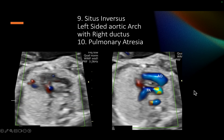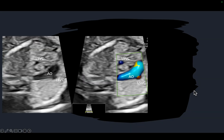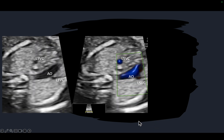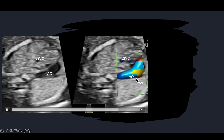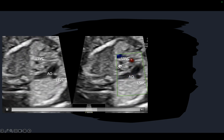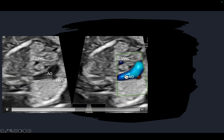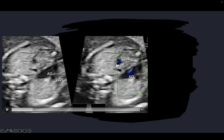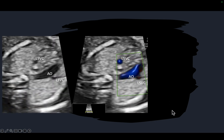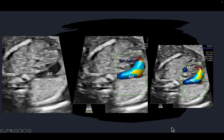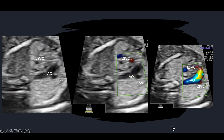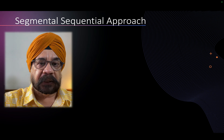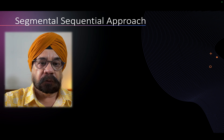Pulmonary atresia led to the retrograde flow of the pulmonary artery from the ductus. The last abnormality in this patient was bilateral superior venae cavae. This is the SVC on the right side, and this is the left SVC. Remember the aorta was on the right side of the trachea, so this was the right SVC and this is the persistent left SVC — bilateral SVCs due to persistent left superior vena cava.